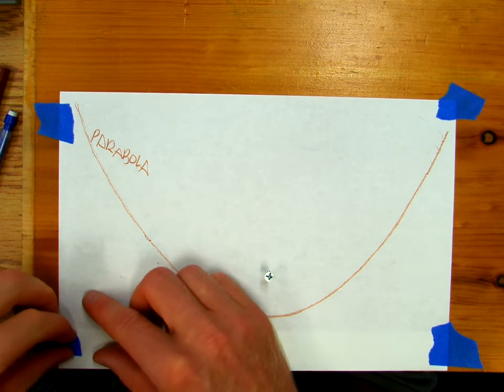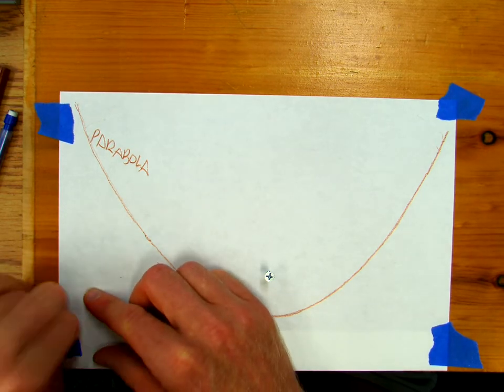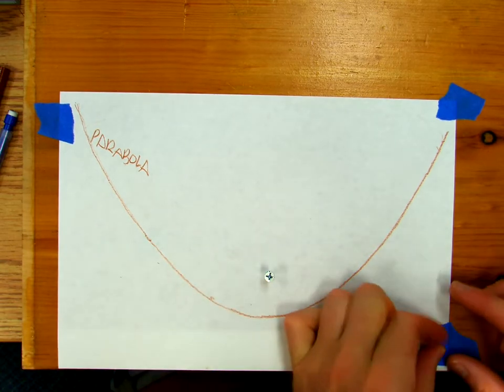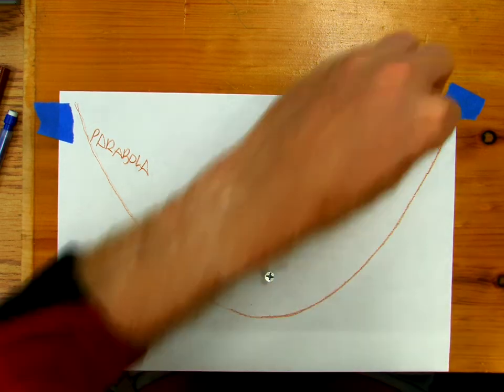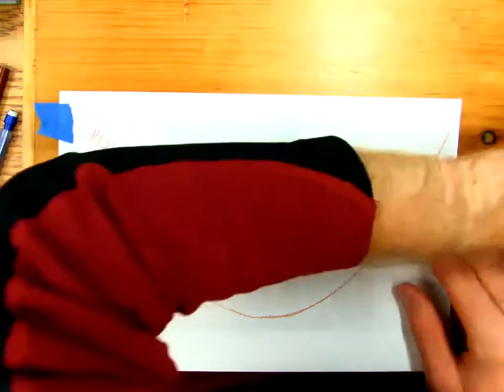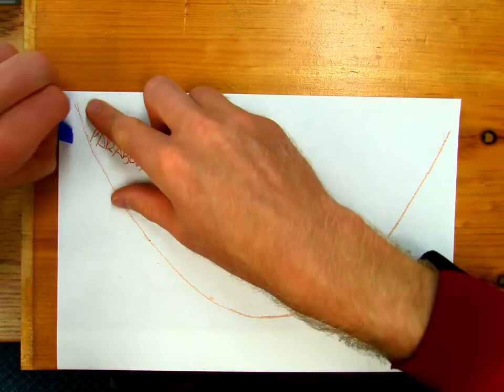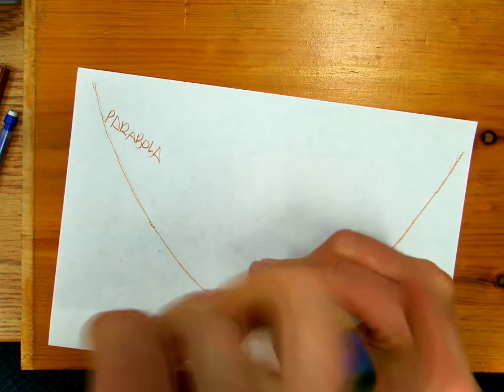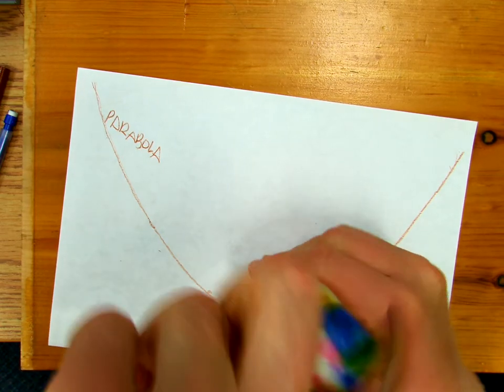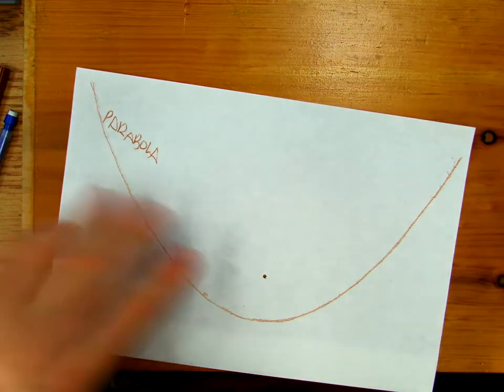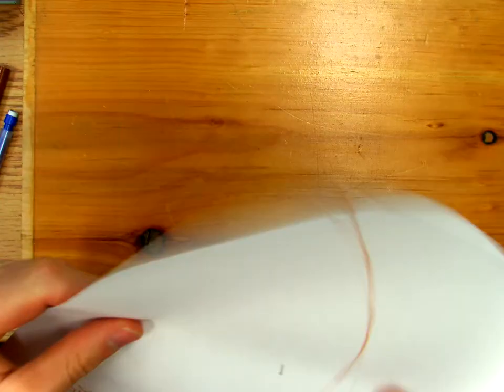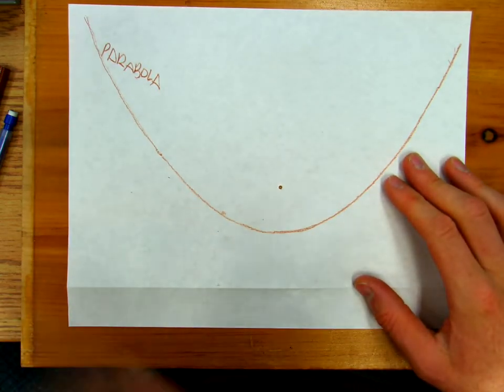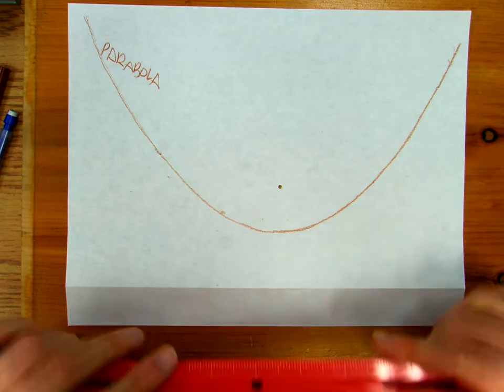So that's my parabola. And now I want to discuss some parts of the parabola that you're going to find in your textbook. So I want to pull it up and detach it from the table.